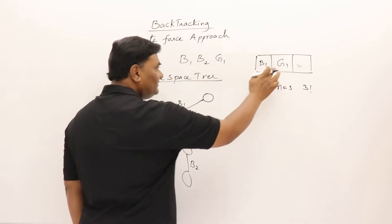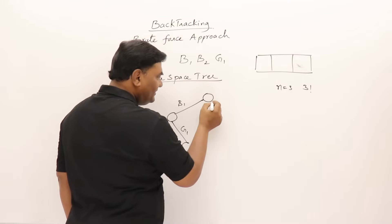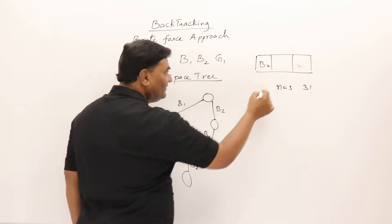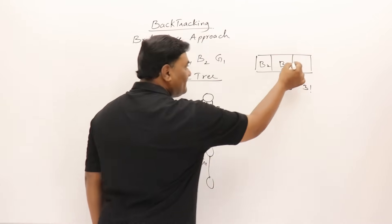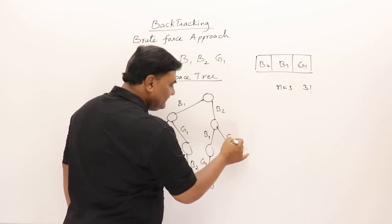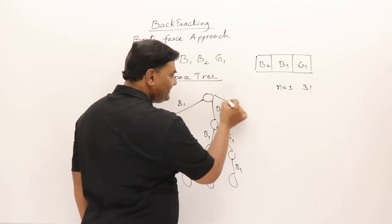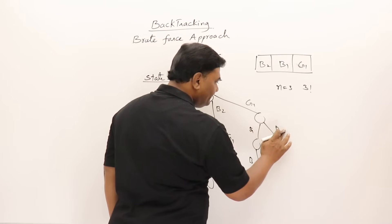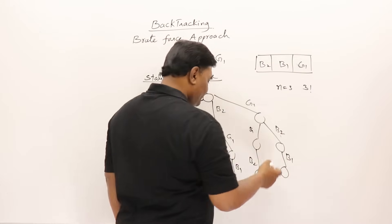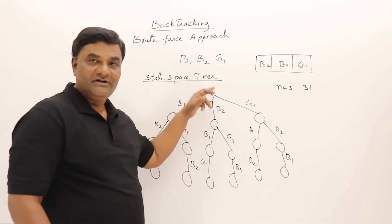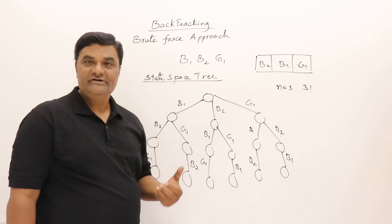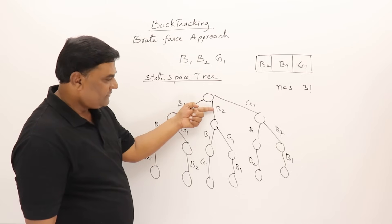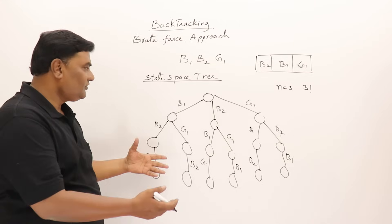Take out boy two and girl one — no other possibility — so take out boy one as well. Next, boy two sits in the first place. Then boy one can sit in second, then girl one. Take out girl one, take out boy one, then girl one sits second, and boy one sits third. Then girl one sits first, then boy one, boy two; and boy two, boy one. So these are all the possible arrangements — one, two, three, four, five, six. Following each path from the root gives one solution, and we have found all six possibilities.